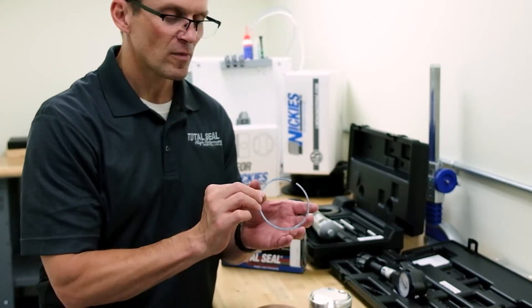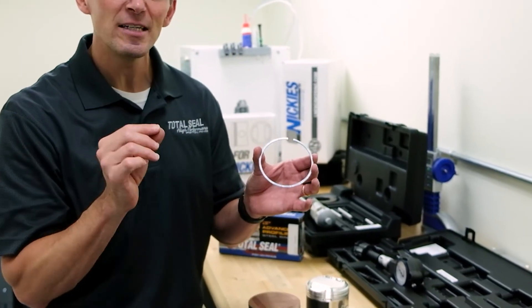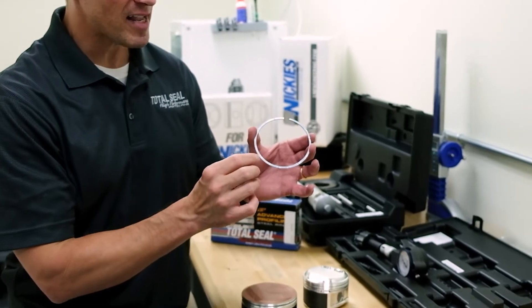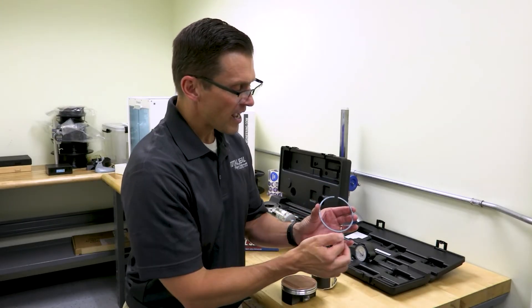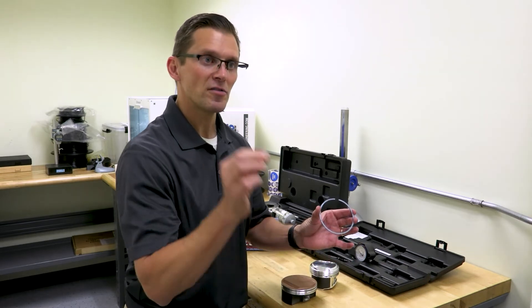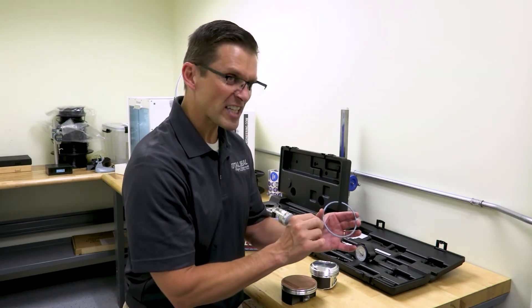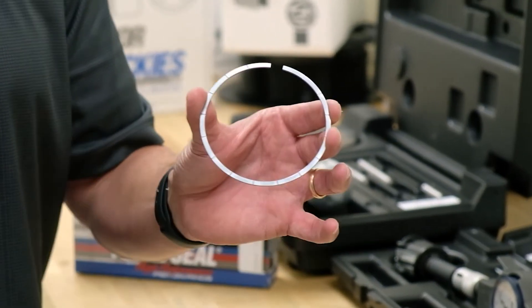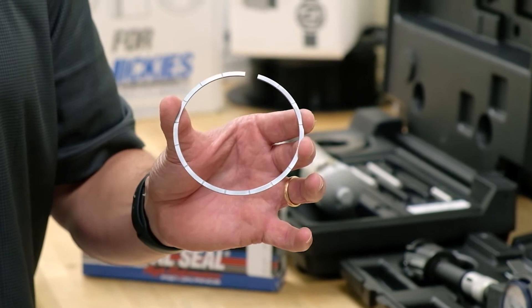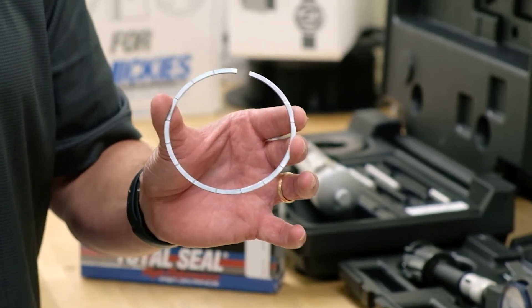At Total Seal, we've created and perfected a gas-ported piston ring. This ring is made out of steel. The detergent additives in motor oil are more effective on steel, so it keeps these ports clean and the effectiveness of the ring stays high for a longer period of time.